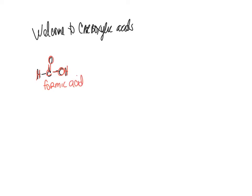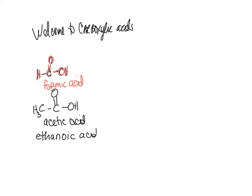Formic acid is actually what stings when ants bite. If you have a carbon, this is acetic acid — the common name — and it's the active ingredient in vinegar. To name it systematically, drop your E and add -oic acid. For butanoic acid, you count four carbons: butane, drop the E, add -oic acid. Butanoic acid smells like rotten butter.